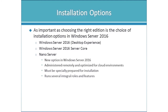Nano Server is the new installation option with no equivalent in Server 2012 or earlier. It is completely administered remotely with no local management whatsoever, optimized for hosting in private cloud environments and data centers. It must be specially prepared for installation — it cannot be installed directly from installation media. Instead, it's installed as a VHD or WIM file built beforehand using Windows PowerShell commands. When creating that file, you can choose to include packages for roles like Hyper-V, failover clustering, file server, DNS, and IIS.